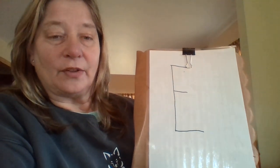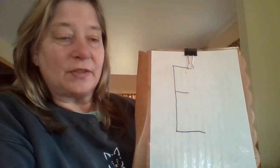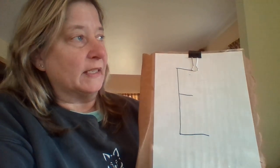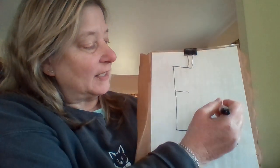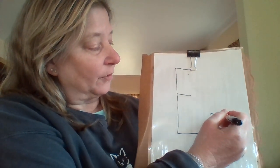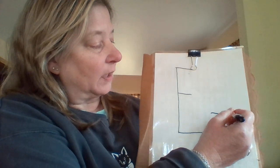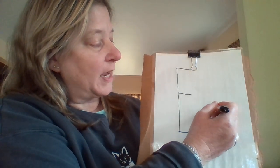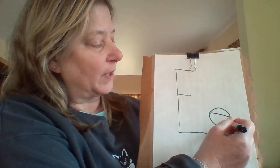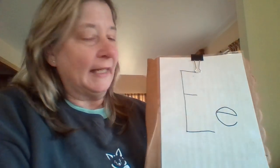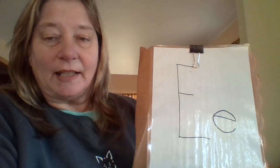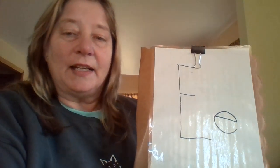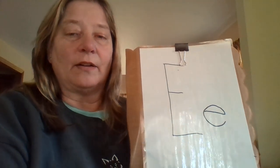Letters. Letters have names. What is the name of this letter? Little line left to right. Up, curve around, curve down and around. E. E is the name of this letter.